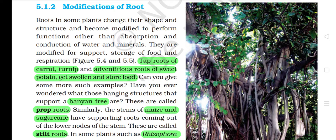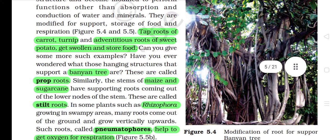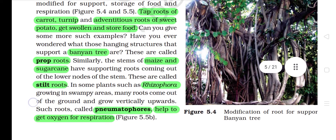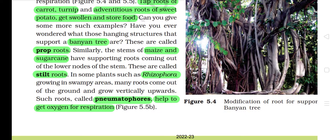Have you ever wondered what those hanging structures that support a banyan tree are? These are called prop roots. Similarly, the stems of maize and sugarcane have supporting roots coming out of the lower nodes of the stem — these are called stilt roots. In some plants such as Rhizophora growing in swampy areas, many roots come out of the ground and grow vertically upwards. Such roots, called pneumatophores, help to get oxygen for respiration.